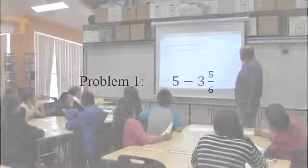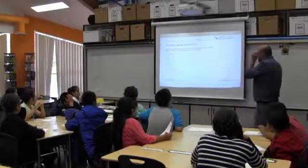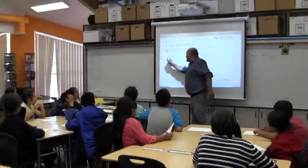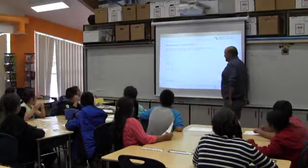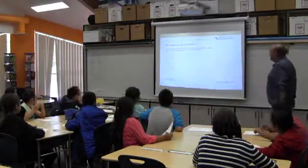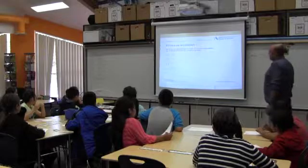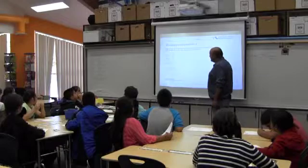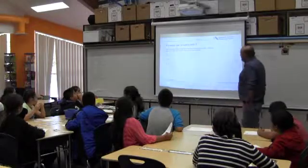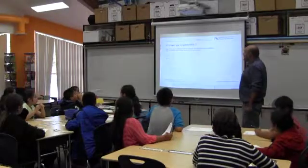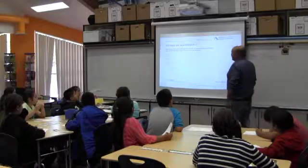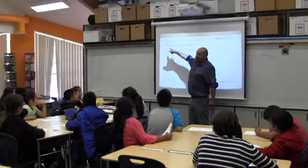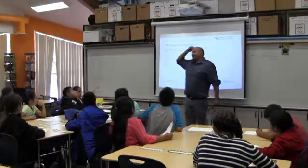Four minus three is one. Can you tell me why you did this step right here? Why did you regroup it that way? Because it's a whole number and together it's a fraction. It makes it easier, right? Does everybody understand that four and six-sixths is the same as five? Yes. Why? Because six-sixths.